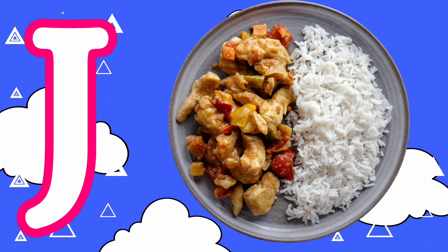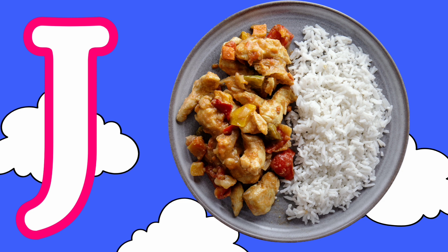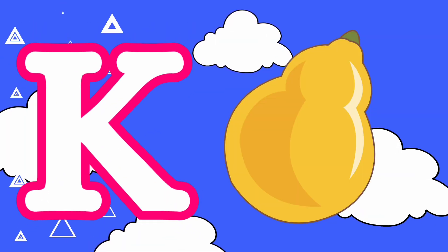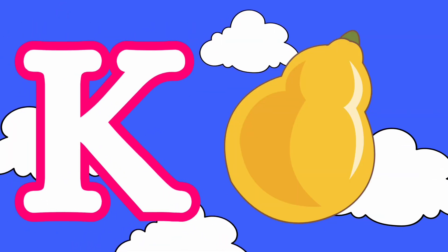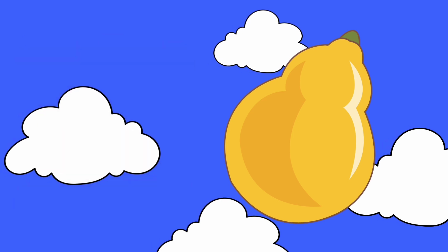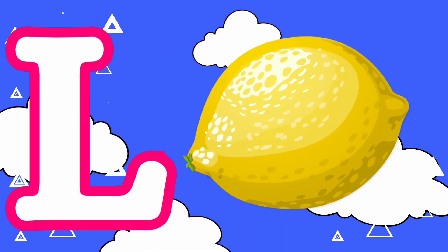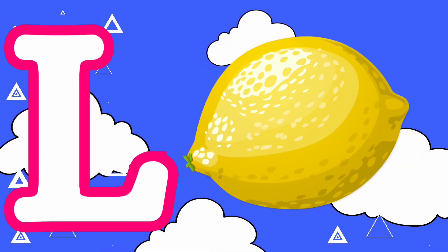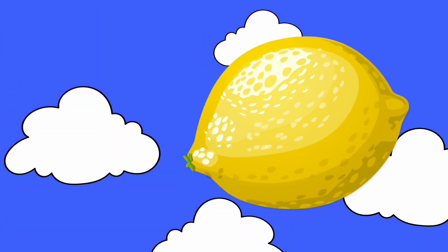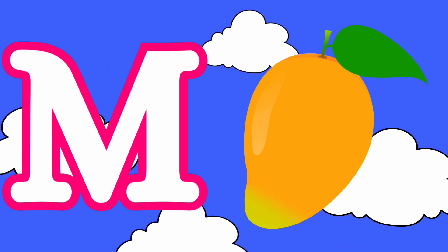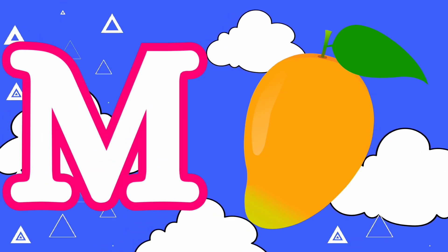I is for Ice Cream. J is for Japanese Food. K is for King Food. N is for Lemon.